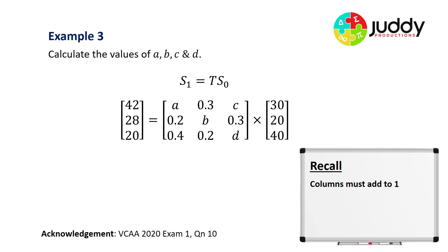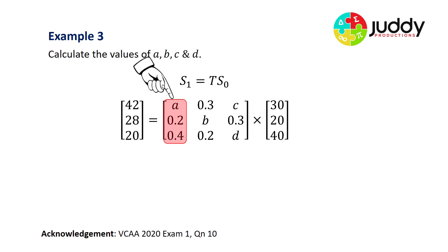You will recall the columns of any transition matrix must add up to one because they're a probability sum. Looking at column one, A plus 0.2 plus 0.4 equals one. Well, 0.2 and 0.4 together give us 0.6, which means A must equal 0.4. So we've got our first answer, A equals 0.4. We'll put that in our matrix.